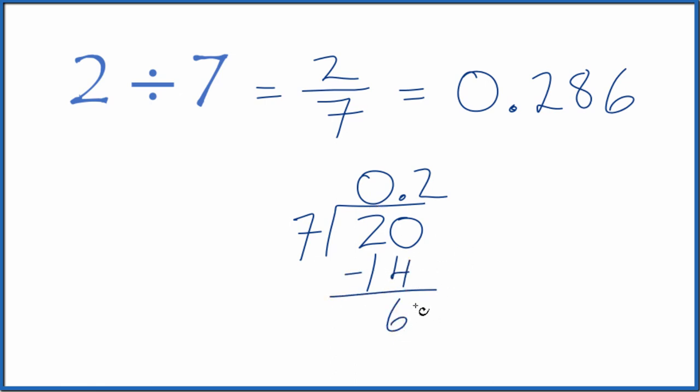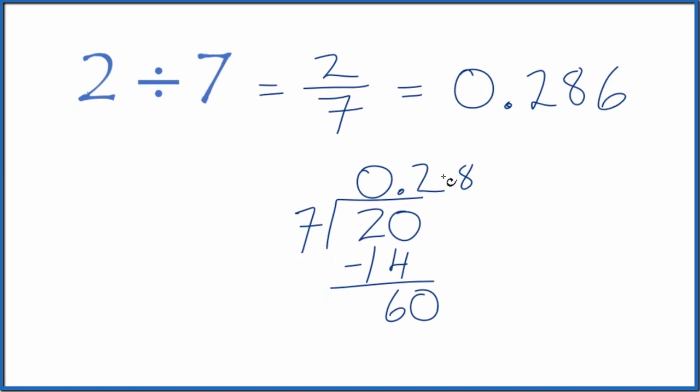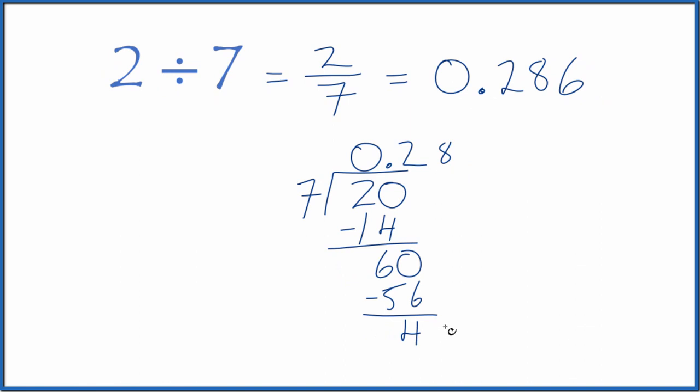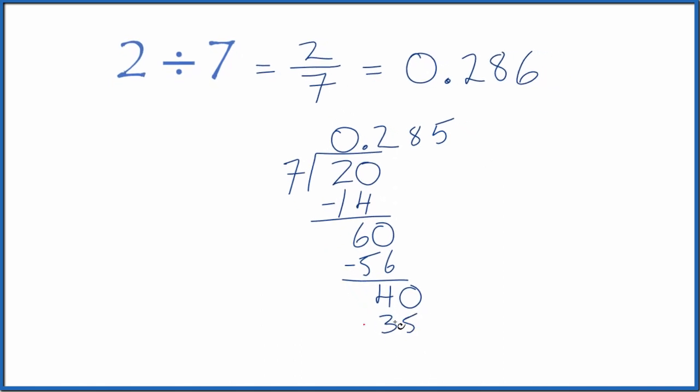So call it 60. We'll move over 1. 8 times 7, that's 56. So we subtract, we get 4, call it 40, move over 1. 5 times 7, that's 35. Subtract, we get 5, call it 50, move over 1. And 7 times 7, that's 49.